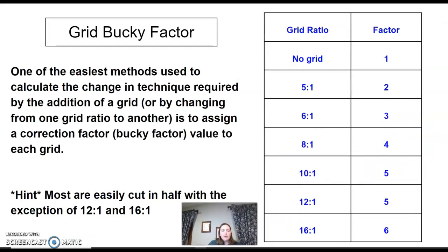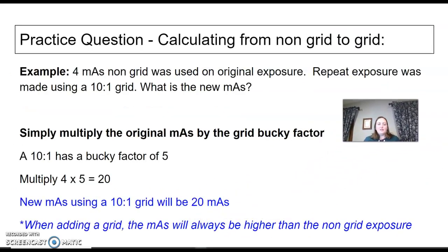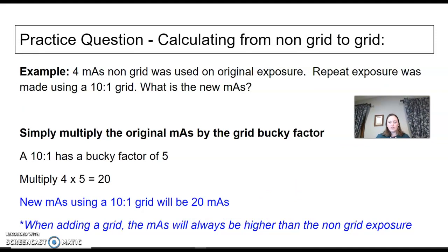Grid bucky factor. These are fairly easy. For each grid ratio they have a factor to use on multiplications. Most of them, the cheater is to just cut it in half: 5 to 1 is 2, 6 to 1 is 3, 8 to 1 is 4, 10 to 1 is 5, until you get to the 12—and for some reason 12 and 10 are the same at 5—and 16 to 1 is 6. You just have to memorize these. Cheryl has a song she calls it: two three four five five six. If that helps you remember it.